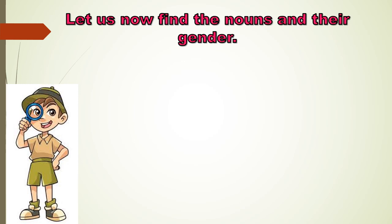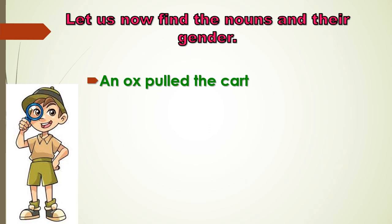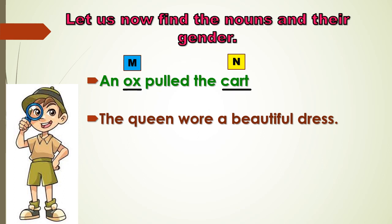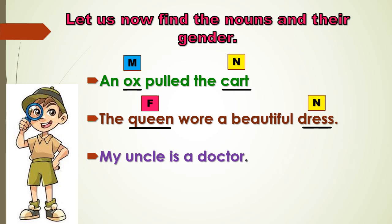Now let us find the nouns and identify their genders in these examples. The first example: 'An ox pulled the cart.' Here, ox is a noun and is a masculine gender; cart is also a noun and belongs to neuter gender because it is a non-living object. Second example: 'The queen wore a beautiful dress.' Queen is a feminine gender and dress is a neuter gender. Third example: 'My uncle is a doctor.' Uncle is a masculine gender and doctor is a common gender.